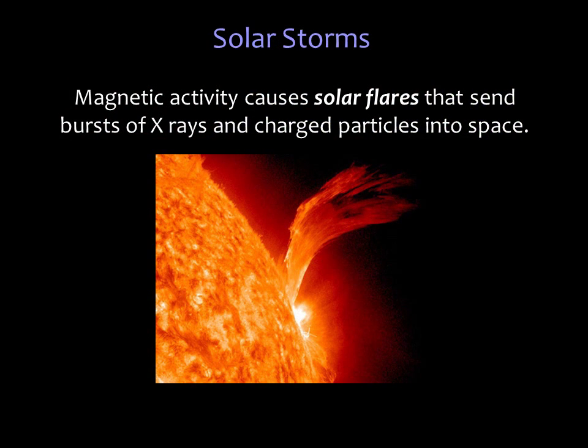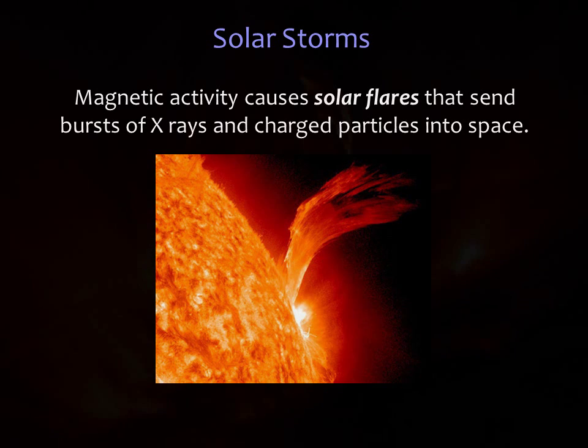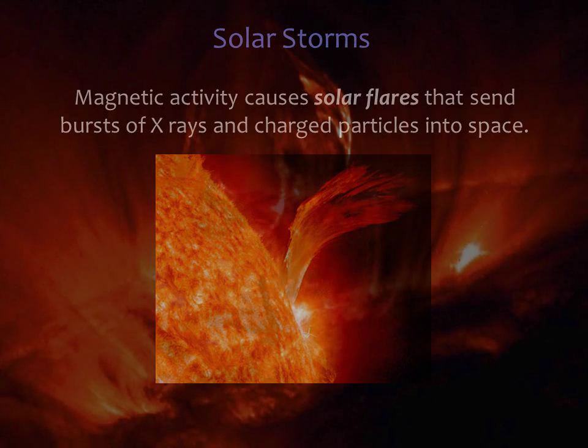The magnetic fields winding through sunspots and prominences sometimes undergo dramatic and sudden changes, producing short-lived but intense storms on the sun. The most dramatic of these storms are called solar flares. It's thought that flares occur when the magnetic field lines become so twisted and knotted that they can no longer bear the tension — they suddenly snap and reorganize themselves into a less twisted configuration, releasing enormous amounts of energy in the process.